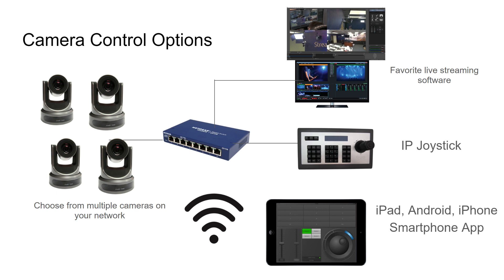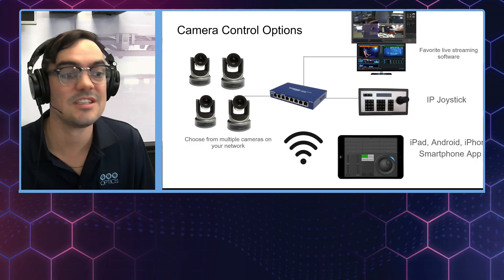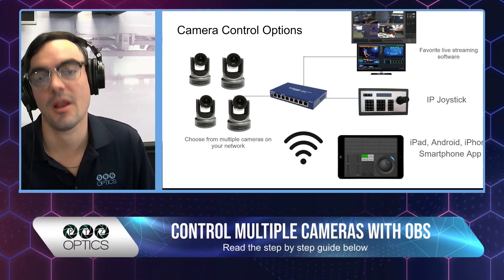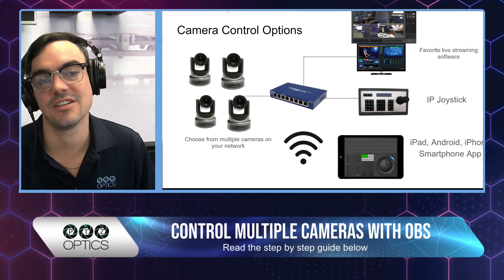You will need to have your cameras on the same local area network as your live video production software. I will create a video about vMix and how to do this, but this video is all about OBS. You can have an IP joystick or an iPad — those are still great for manual control — but when you're issuing presets between scene changes, it's a great idea to use automation.